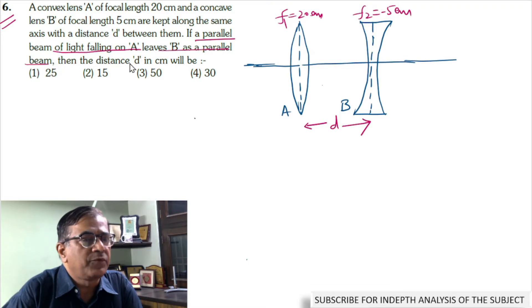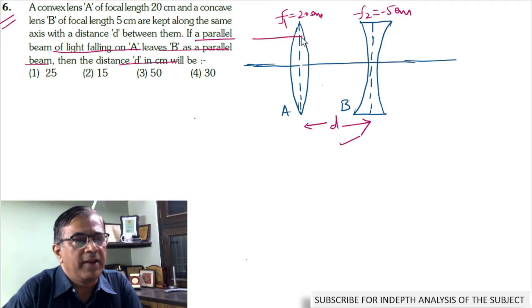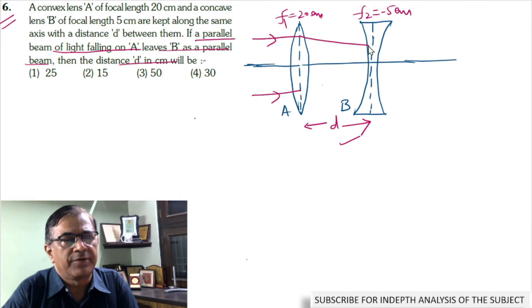And we are supposed to find the distance between the two lenses. Now here is a parallel beam of light that is incident upon the convex lens A. These rays are refracted.